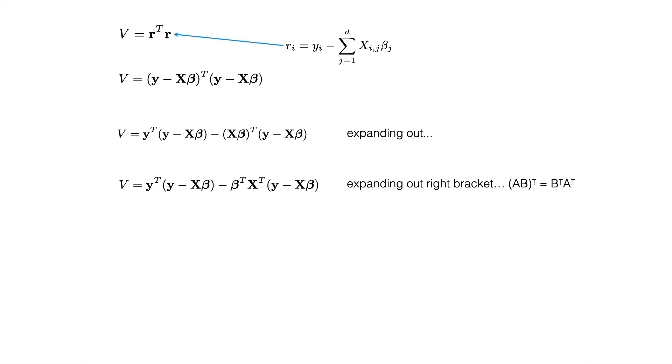For that X beta term one trick we can use is the fact that if we have AB all transposed that's equal to B transpose A transpose. This is one of several standard linear algebra identities that I'm going to use throughout this derivation. We can go through and multiply out all of the brackets.